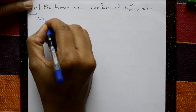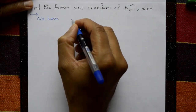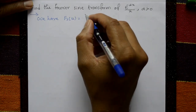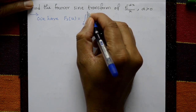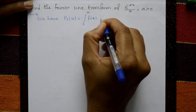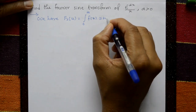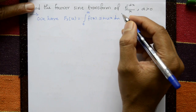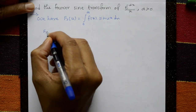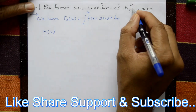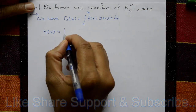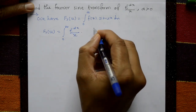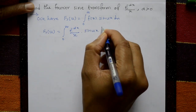The Fourier sine transform Fs of u is defined as the integration from 0 to infinity of f(x) into sin(ux) with respect to x. So Fs(u) equals the integration from 0 to infinity of e to the power minus alpha x over x, into sin(ux) dx.